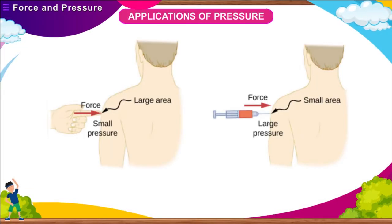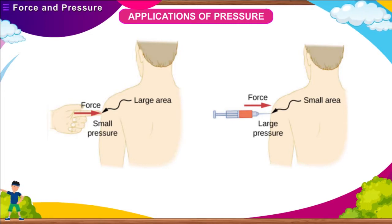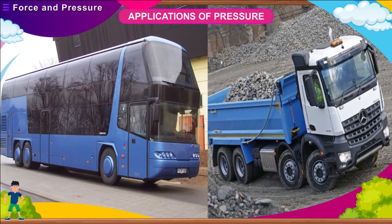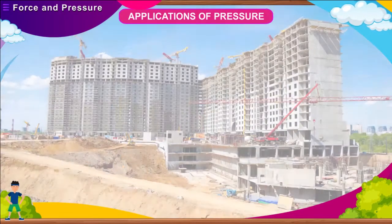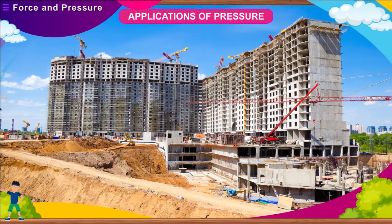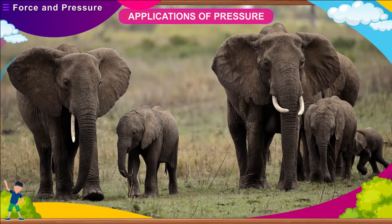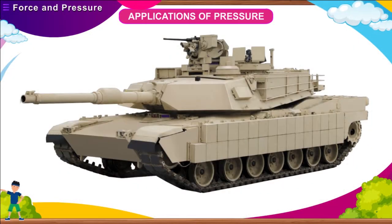Pressure finds various applications in everyday life. Nails and needles have pointed tips to decrease the area of contact, so that for a given force the pressure exerted is more. Buses and trucks have double wheels at the rear to increase the area of contact, reducing pressure on the ground. Tall buildings have broad foundations to prevent them from sinking. Heavy animals like elephants have broad feet to decrease the pressure they exert while walking. Army tanks have caterpillar wheels to increase the area and exert less pressure on the ground.